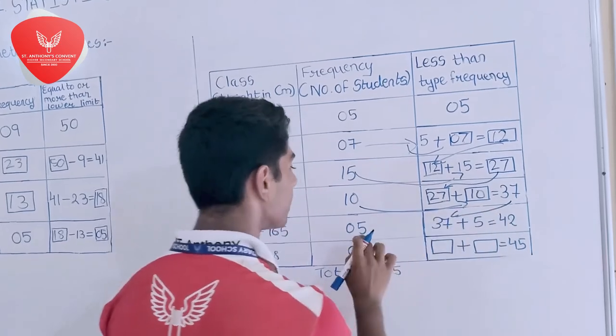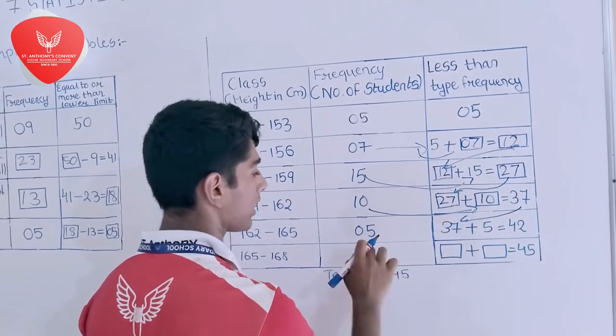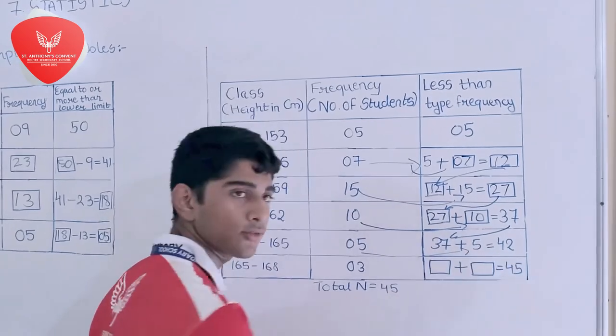This 37 will come over here and 37 plus 5, this 5 will come over here. 37 plus 5 is equal to 42.